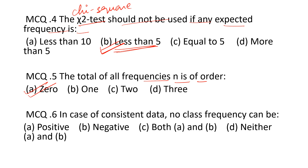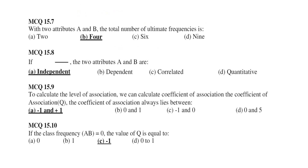Option A says: in case of consistent data, no class frequency can be negative — all data will be positive. Next: with two attributes A and B, the total number of ultimate class frequencies is 2^N, where N is the number of attributes. Here N = 2, so 2² = 4. The correct option is B.